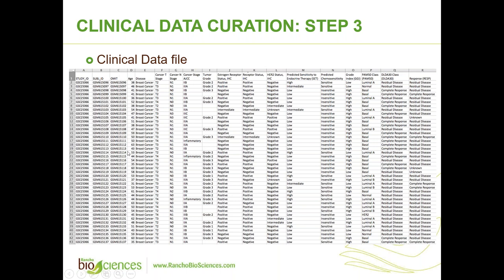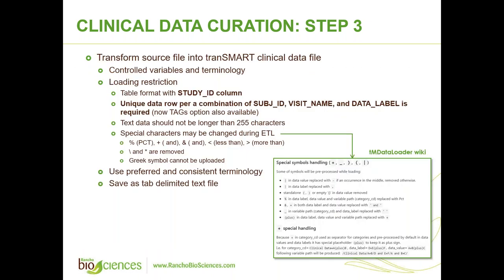Once you transpose the data, you can start manipulating it. The first alteration is to add your study ID as the first column — for a GEO study, use the GEO ID such as GSE25066. Then you can rename variables, change coded variables into human-readable format, and omit columns that are duplicates or not needed. Once your data file is ready, save it as a tab-delimited text file. For more complex datasets, you can also use the tag option, with more advanced options available on the TM data loader wiki.